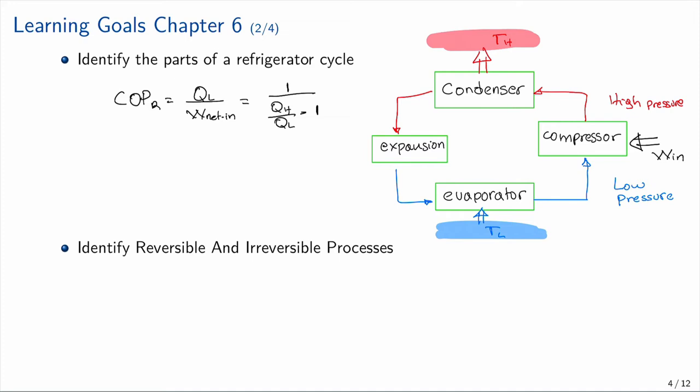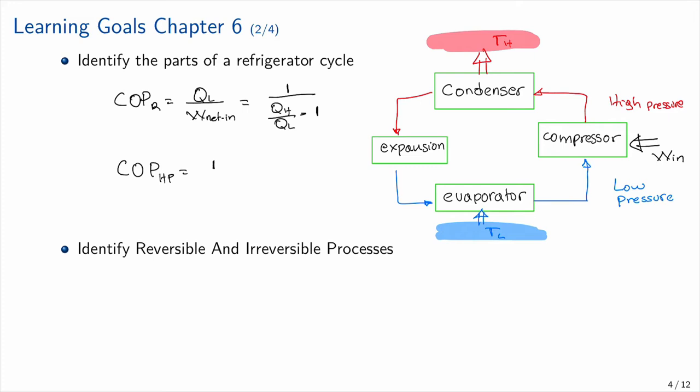In a refrigerator, the purpose is to remove energy from the low-temperature body. In a heat pump, the purpose is to provide energy to the high-temperature body. The coefficient of performance for the heat pump is COP_HP = 1 / (1 − QL/QH).